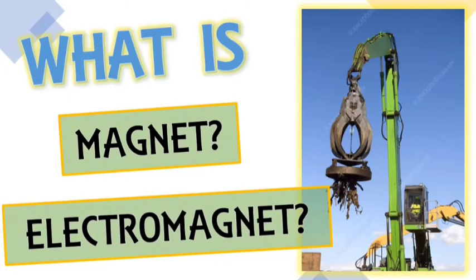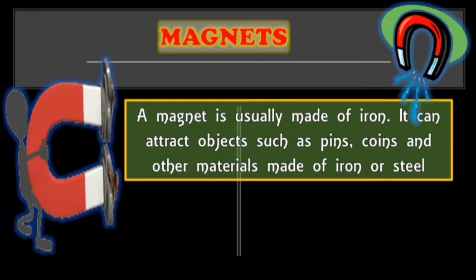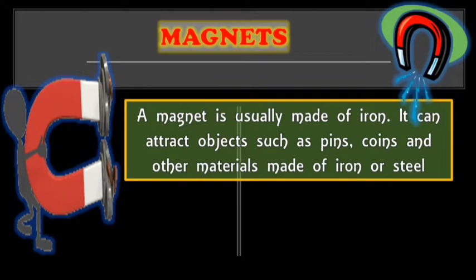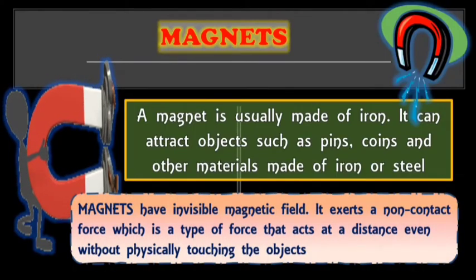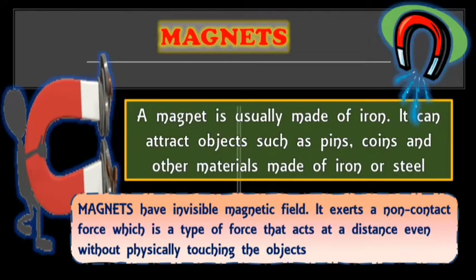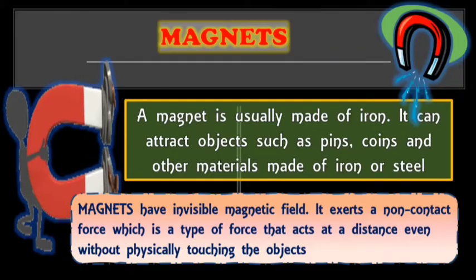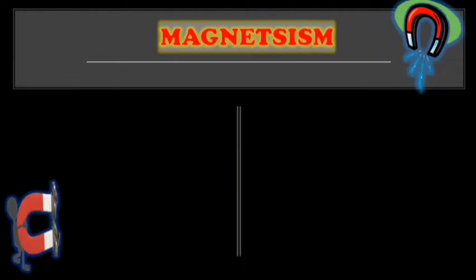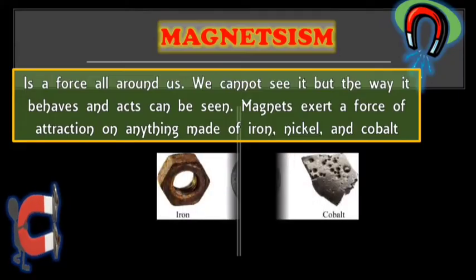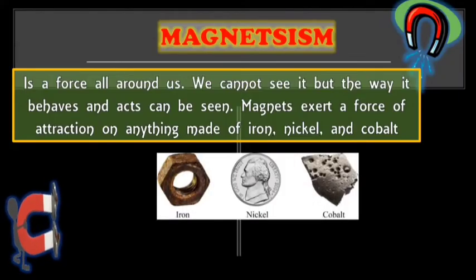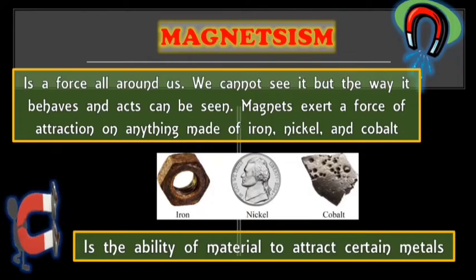So magnets, a magnet is usually made of iron. It can attract objects such as pins, coins, and other materials made of iron or steel. Magnets have invisible magnetic field. It exerts a non-contact force which is a type of force that acts at a distance even without physically touching the objects. And magnetism is a force all around us. We cannot see it but the way it behaves and acts can be seen. Magnets exerts a force of attraction on anything made of iron, nickel, and cobalt. Magnetism is the ability of the material to attract certain metals.